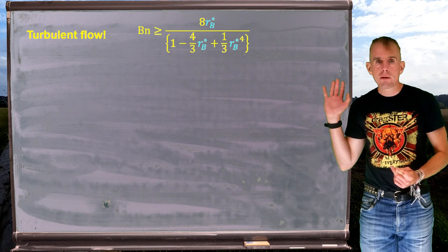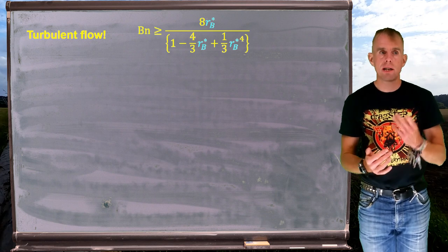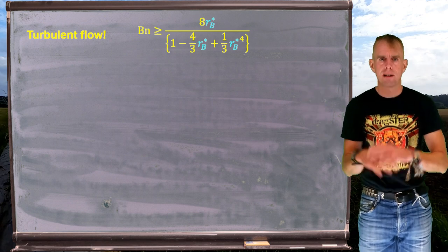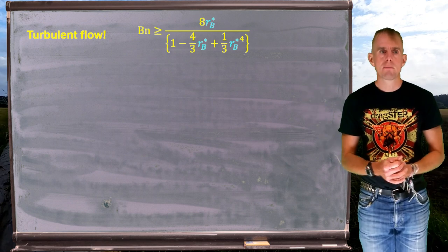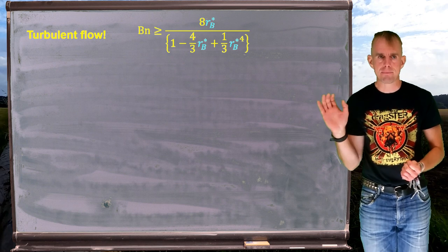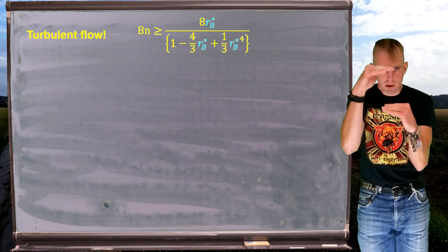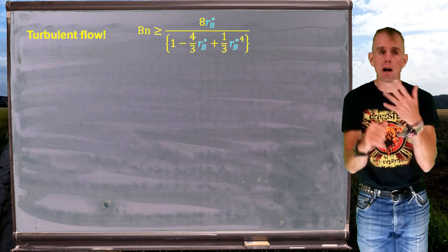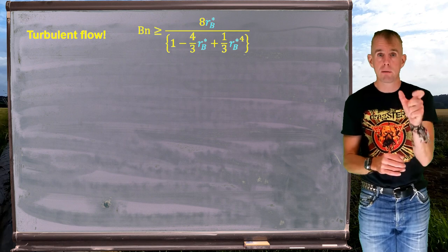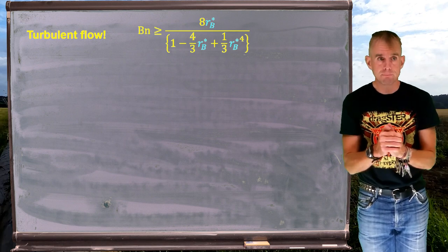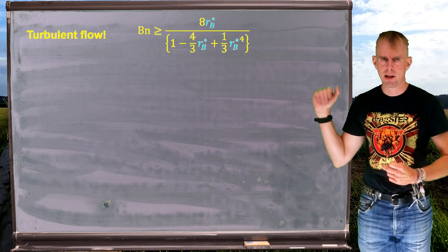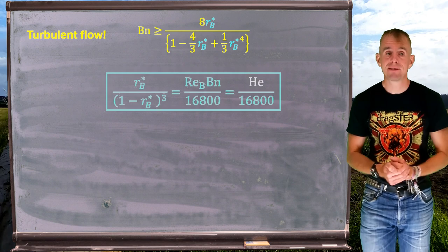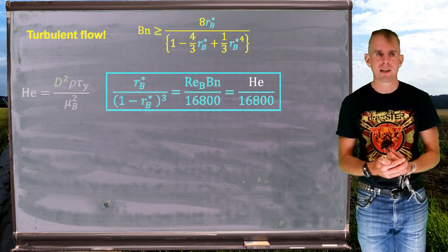We can write an expression down in terms of the Bingham number for the flow transition. It involves a quantity R_B, which is a critical core radius at which the flow transition happens. R_B* is R_B normalised by pipe radius R. In order to evaluate that expression we need to know what R_B* is.